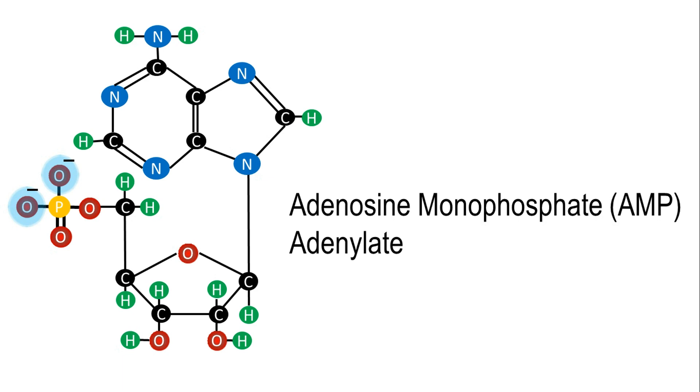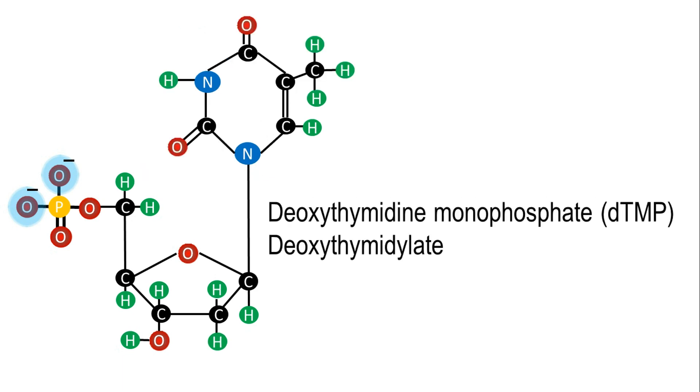Also, in deoxyribonucleotides, we only add the prefix deoxy. The thymine deoxyribonucleotide is named deoxythymidine monophosphate, dTMP or deoxythymidylate.